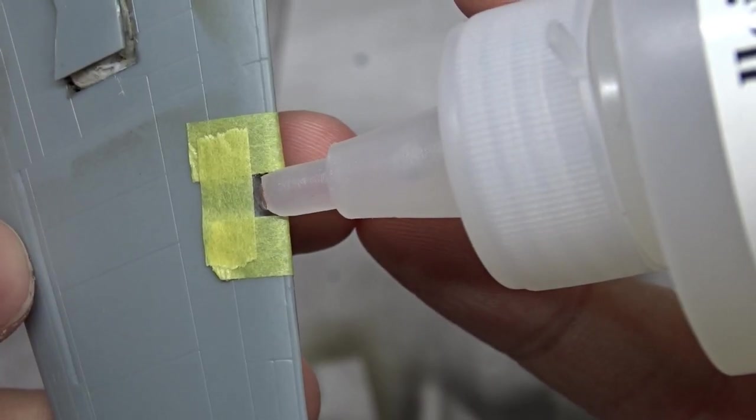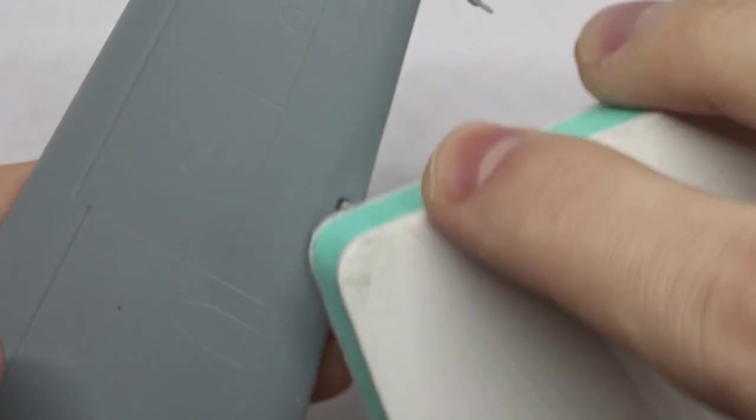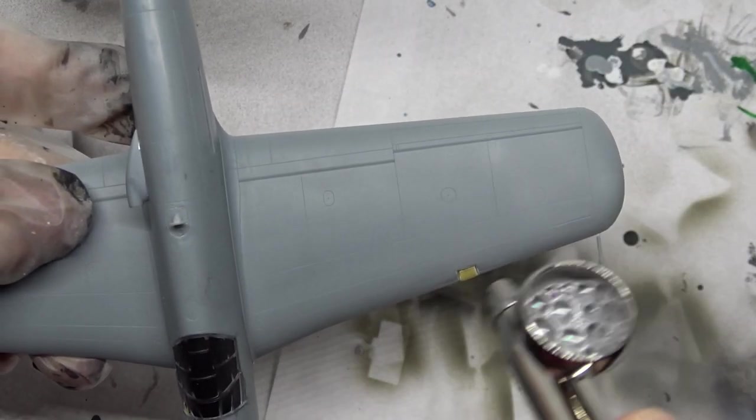It also dries transparent, so I thought it would make a good recreation of glass. I applied it three or four times until the gap was filled. Then I sanded it flat and masked it off, so I could prime the aircraft.